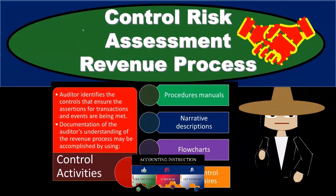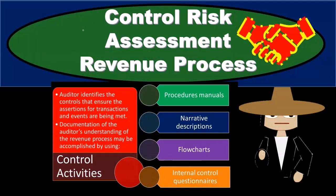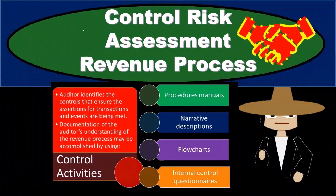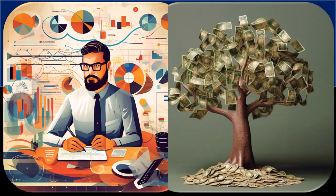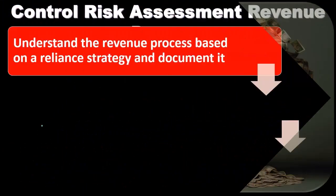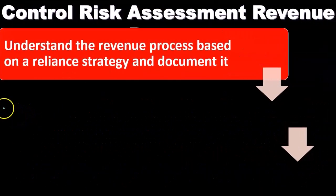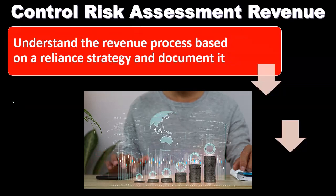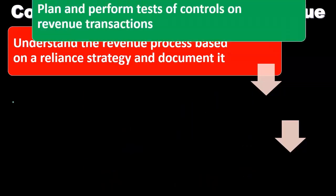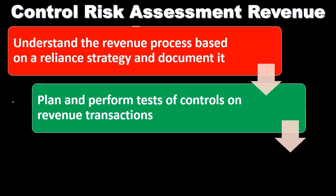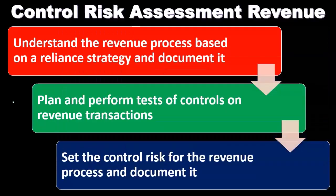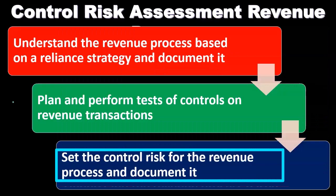As the auditor, we want to consider what the control risks are related to the revenue process so we can assess them as high or low and understand how much substantive testing we need to do in relation to revenue recognition. The control risk assessment for revenue involves understanding the revenue process based on a reliance strategy, documenting it, testing internal controls, and then documenting that as part of our audit evidence. We plan and perform tests of controls on revenue transactions and set the control risk for the revenue process.